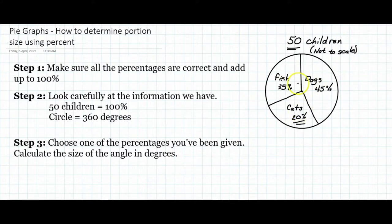45% of the children voted for dogs, 20% voted for cats, and 35% voted for fish. Generally, when answering questions like this, you should break it up into three steps.